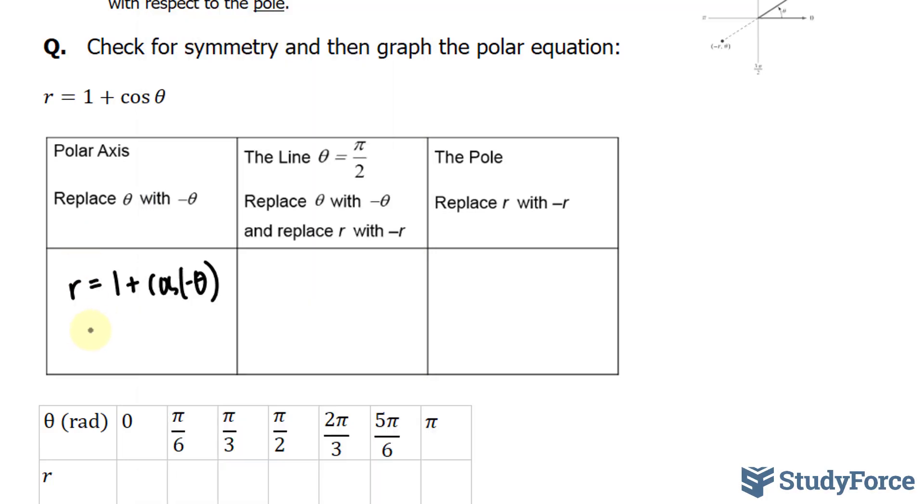So r remains the way it is. What if we replace theta with negative theta and r with negative r? Let's see what happens then. We have negative r equals 1 plus cosine of negative theta. Now we discovered in this test that this one still remains as r, but replacing r with negative r makes r negative.